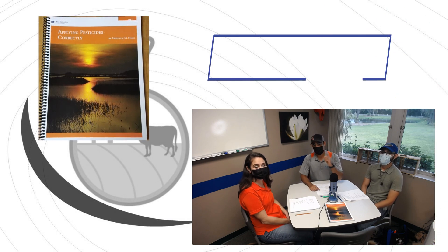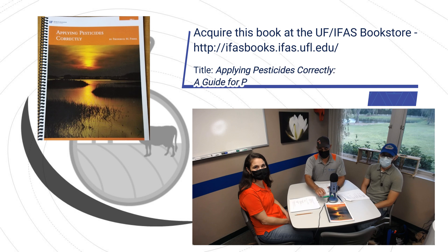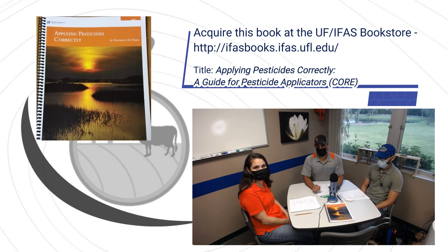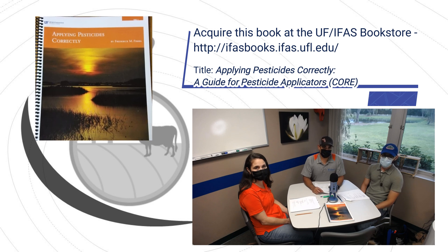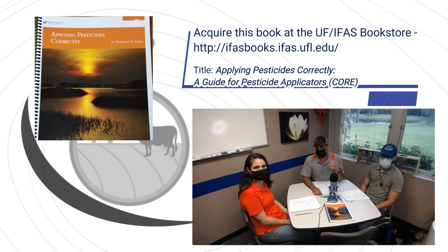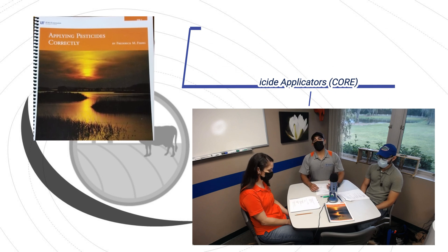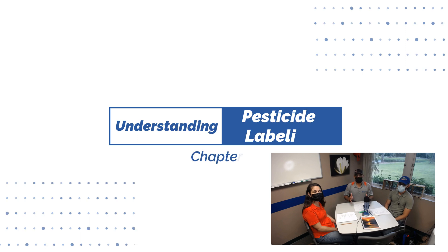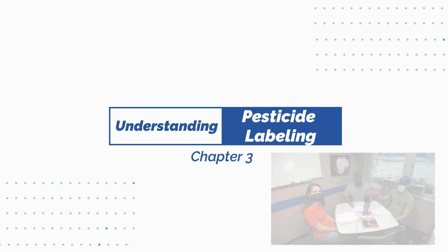Welcome to The Right Dose. This is Chapter 3 of our study guide, Applying Pesticides Correctly. Today we're going to be talking about the label. You've heard us on the previous episode talking about how the label is the law. So today we're going to go in depth on what the label is, what does it have, and what we need to be looking at when we are using a certain product.